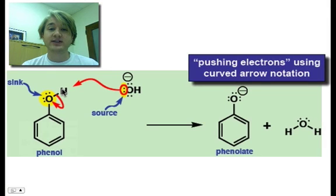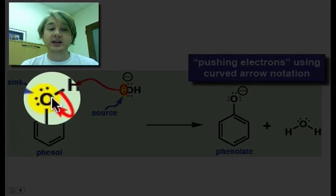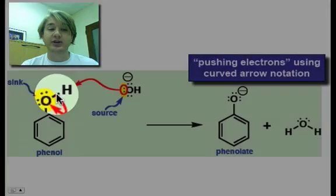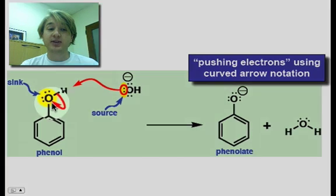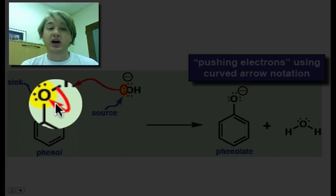Now the electrons that get moved in the second part of this reaction are going to be the electrons between our oxygen on phenol and our hydrogen. Those two electrons that used to be shared between our oxygen and hydrogen now get completely localized onto our oxygen.